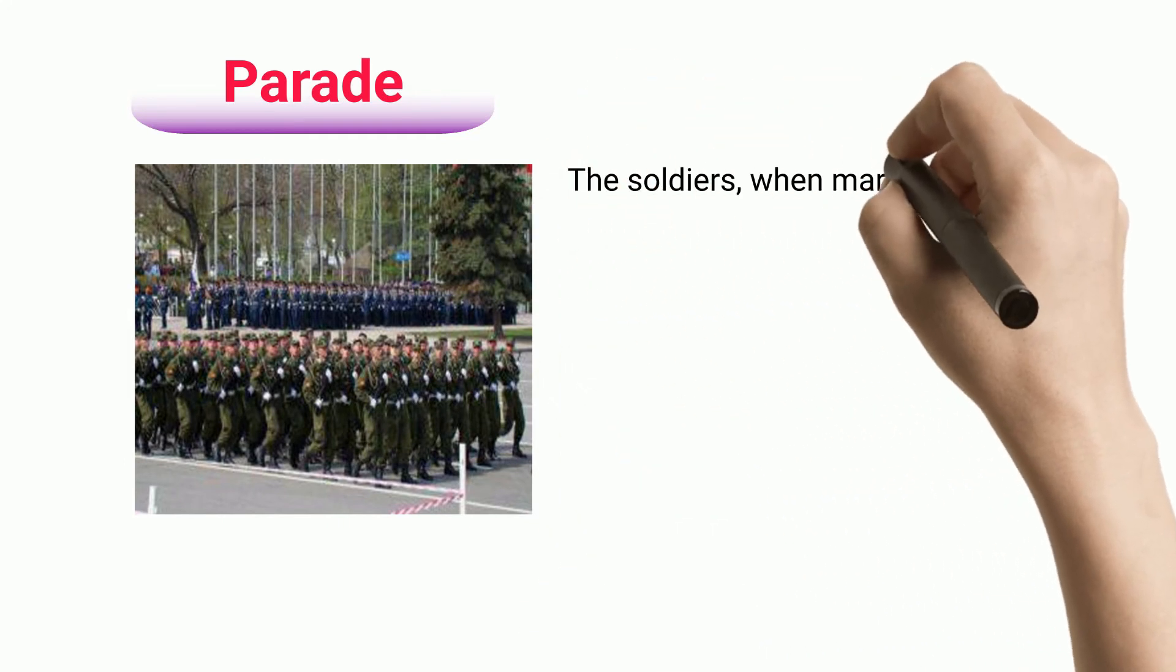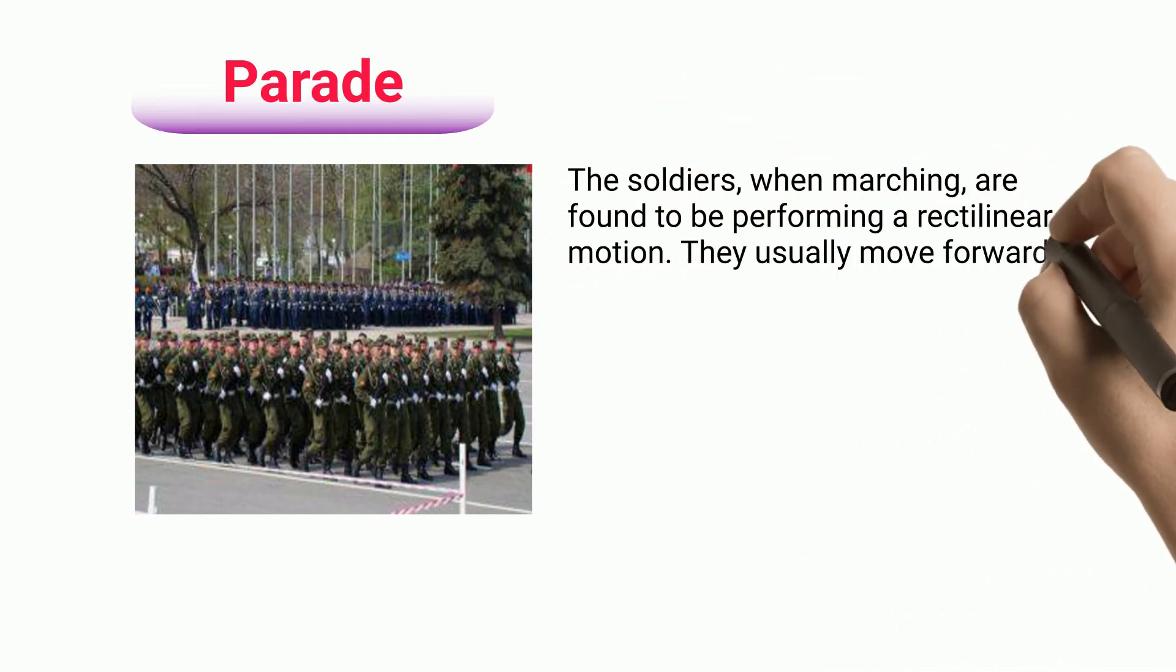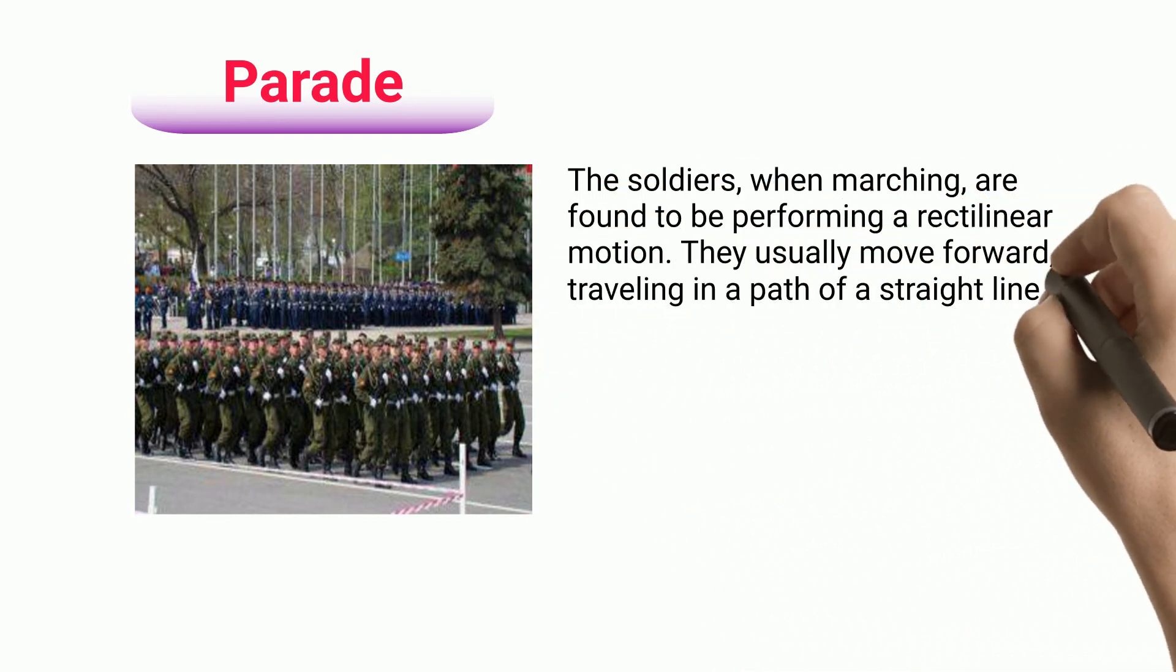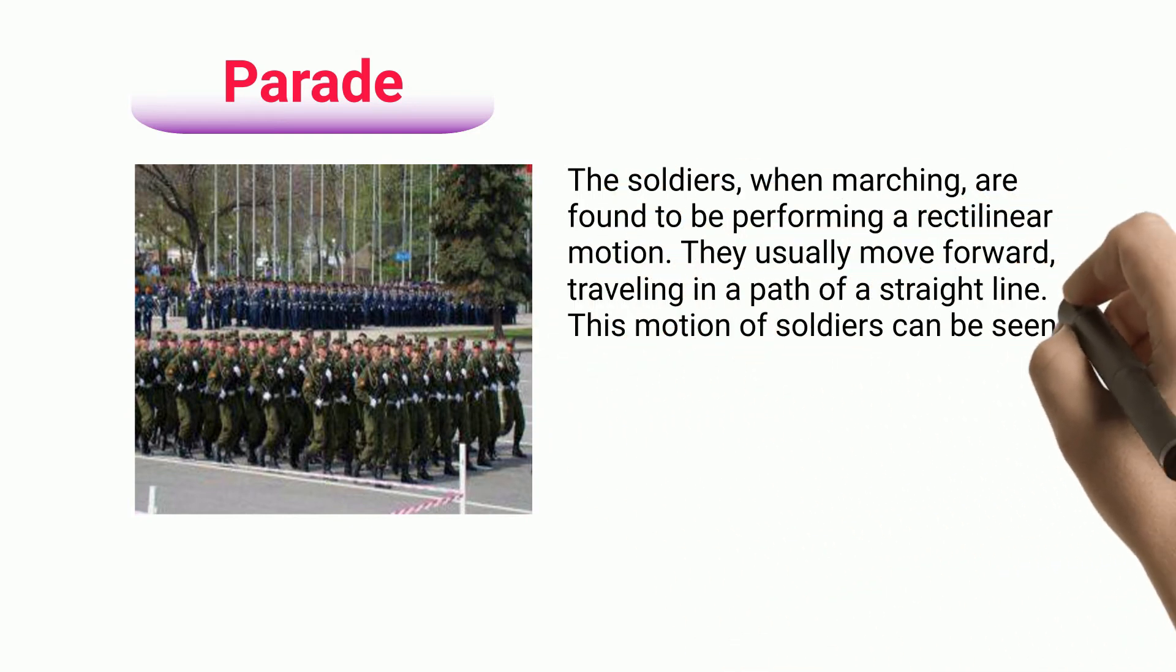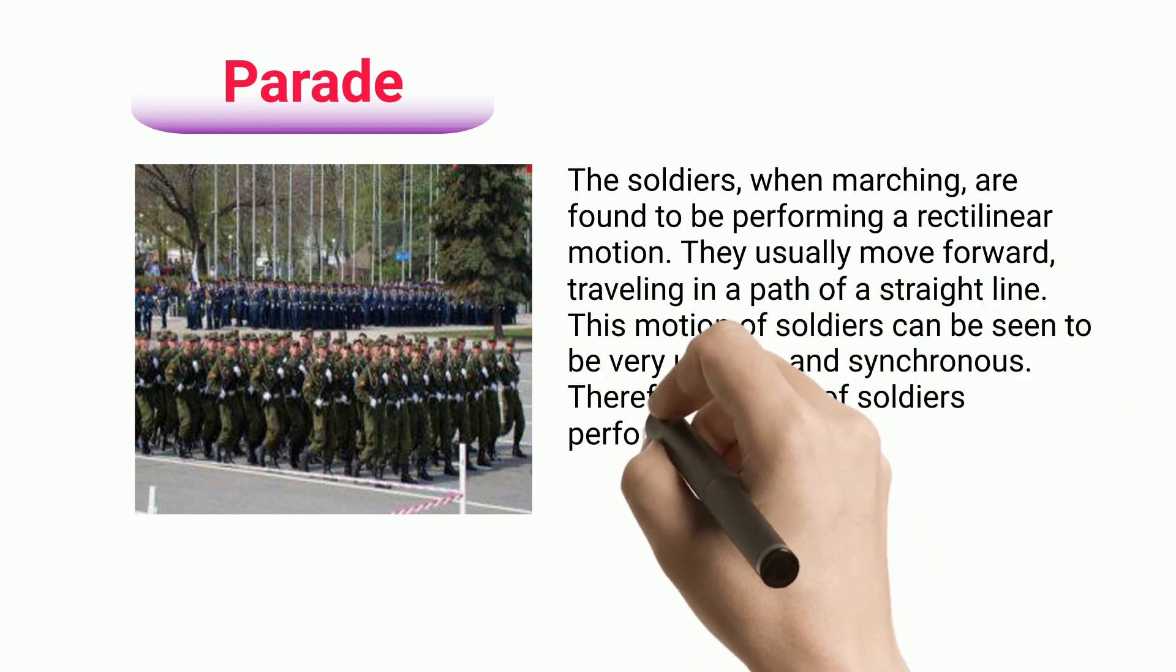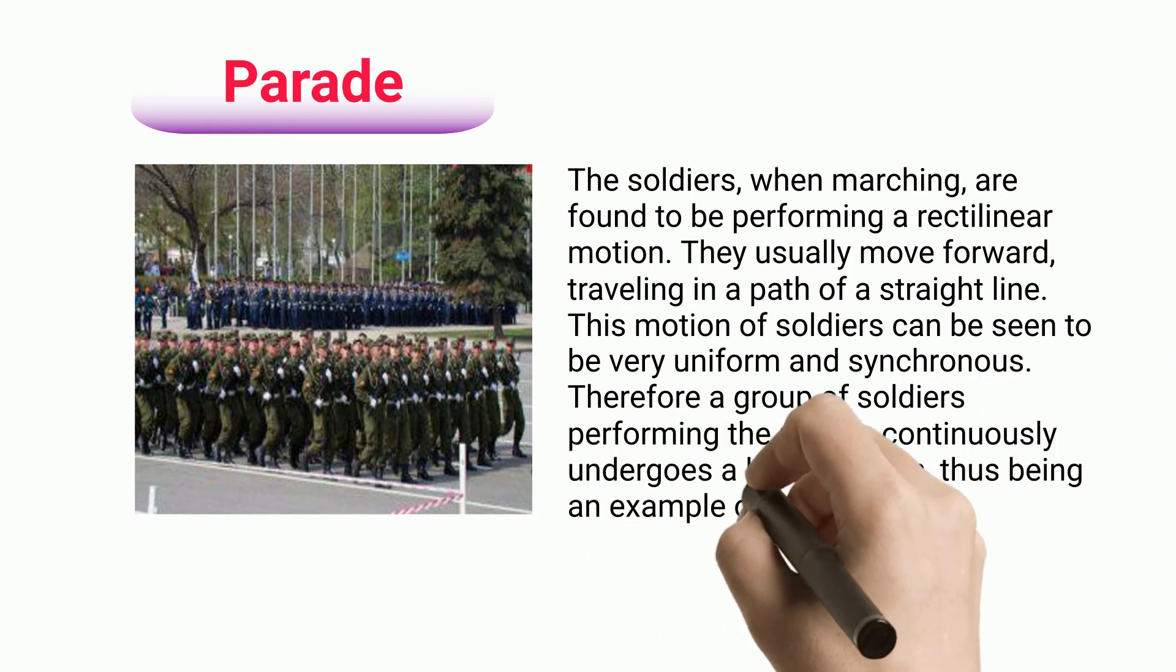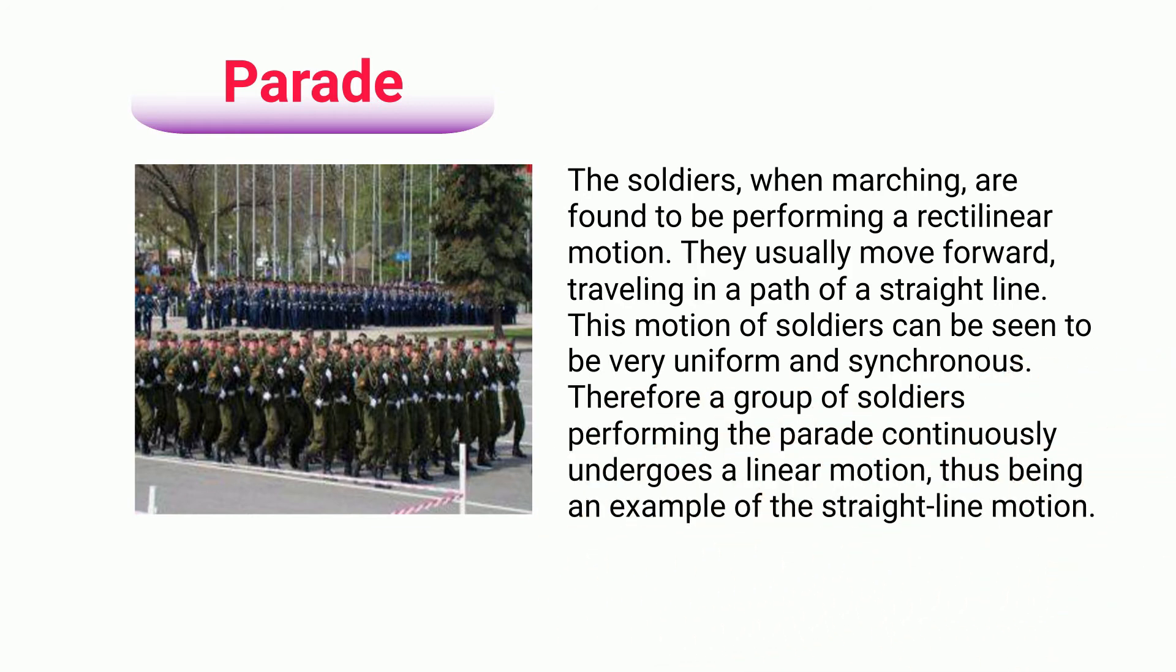Parade: the soldiers when marching are found to be performing a rectilinear motion. They usually move forward traveling in a path of a straight line. This motion of soldiers can be seen to be very uniform and synchronous. Therefore, a group of soldiers performing the parade continuously undergoes linear motion, thus being an example of straight line motion.